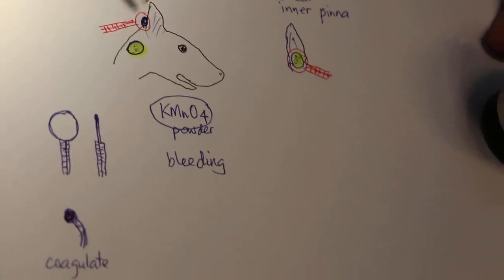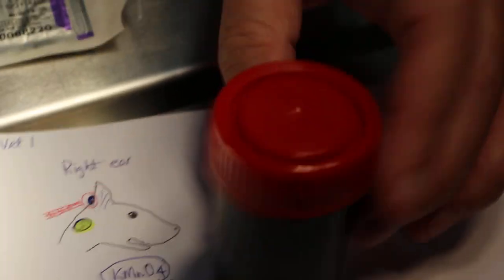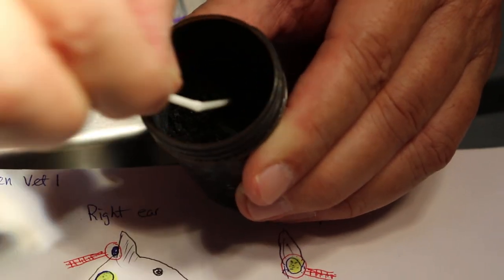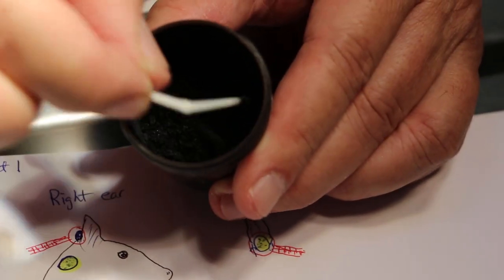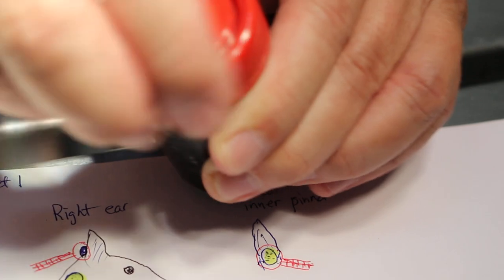Now, if you use this straight one, then you have a big hole here which is bleeding. So, the vet has to use potassium permanganate powder. Using a cotton and then dab potassium permanganate powder on the wound.